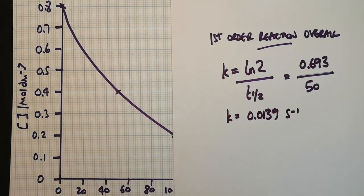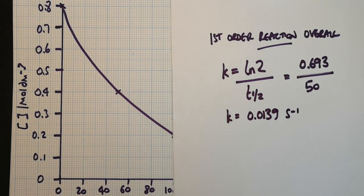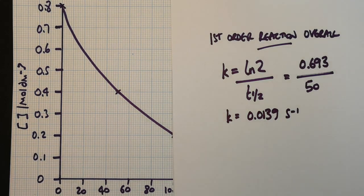Okay, in my next video, we're going to introduce the idea of initial rates methods, which are experimental methods that allow us to determine orders of reaction in a slightly different way. Okay, I'll see you then.